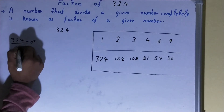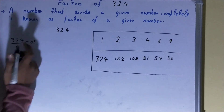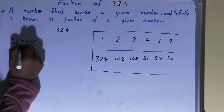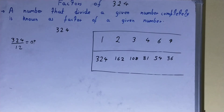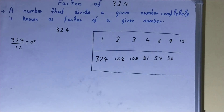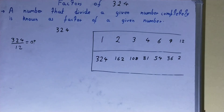After 9, we check with 10: not divisible. We check 11: not divisible. We check 12: 12 × 27 = 324, so 12 is a factor and 27 will also be a factor.